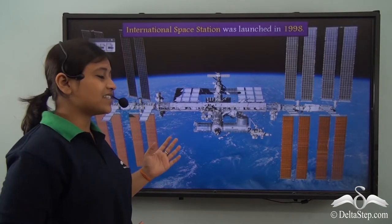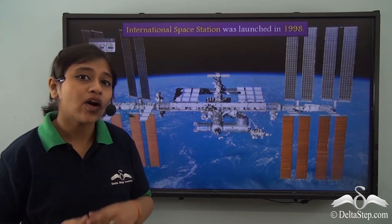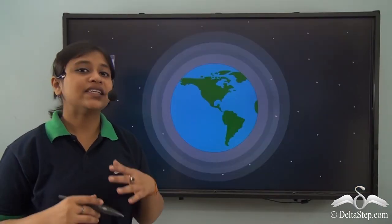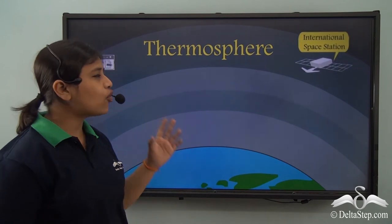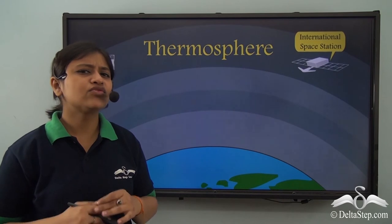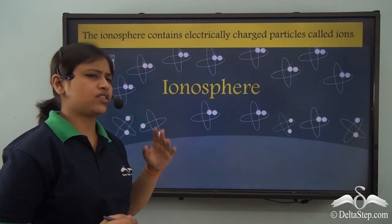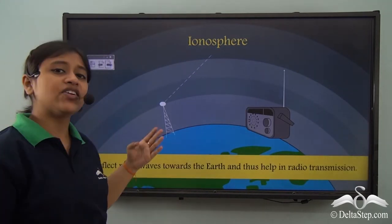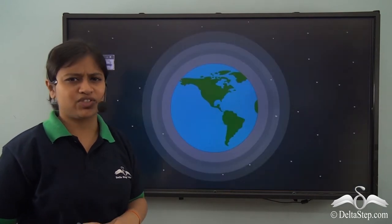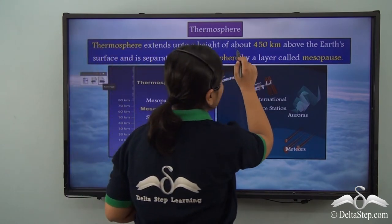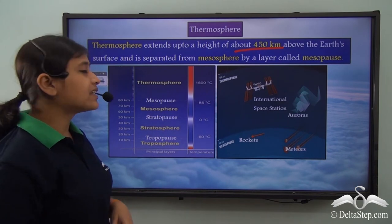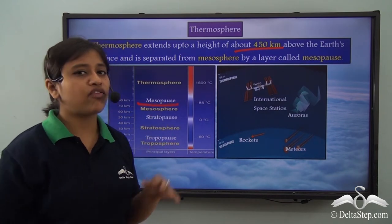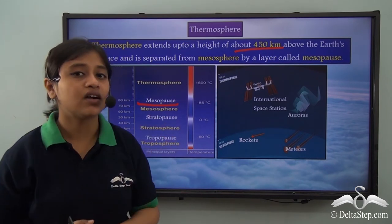The International Space Station has been orbiting since its launch in 1998, and it is located in the fourth layer of the atmosphere — the thermosphere. The thermosphere is also known as the ionosphere because of the presence of electrically charged particles called ions. These ions reflect radio waves to the earth's surface and help in radio transmission. The thermosphere extends to a height of 450 km from the earth's surface and is separated from the mesosphere by the mesopause.